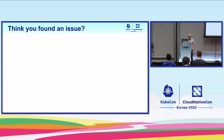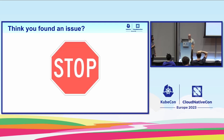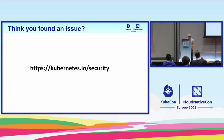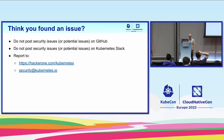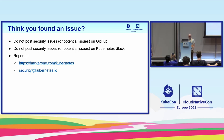Before we start, if you think you've found a security issue, the first place to go is kubernetes.io/security — you'll find helpful resources there on what to do. The short version: please don't post anything you think is or might be a security issue on GitHub, Kubernetes Slack, or message someone you think is on the security committee. Usernames can be faked. Please report to our HackerOne bug bounty program or to our inbox at security@kubernetes.io.